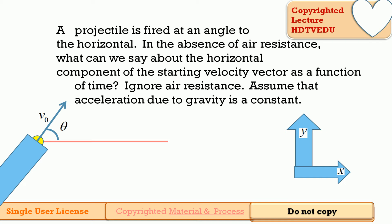A projectile is fired at an angle to the horizontal. Here is the angle theta, here is the horizontal, here is the velocity vector — v0 is the starting velocity vector. In the absence of air resistance, what can we say about the horizontal component of the starting velocity vector as a function of time? Ignore air resistance. Assume that acceleration due to gravity is a constant.